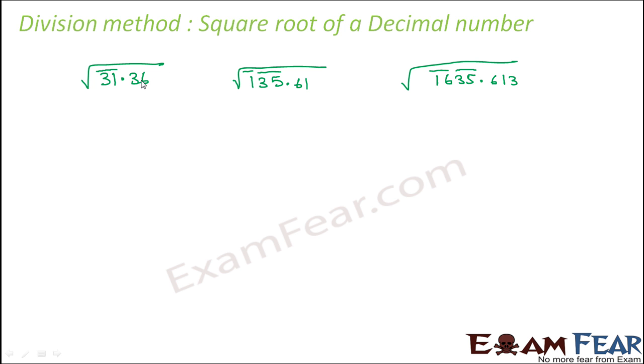But for the fractional part, we place the bars starting from the digit immediately after the decimal point. So the digit immediately after is 3, so we start placing the bar from this side. We put 3, 6 together. Similarly, here we put 6, 1 together. Here we start putting the bar from this side, so we put 6, 1 together and then we have 3. So there is nothing after 3, so we place a 0 and put 3, 0 together.